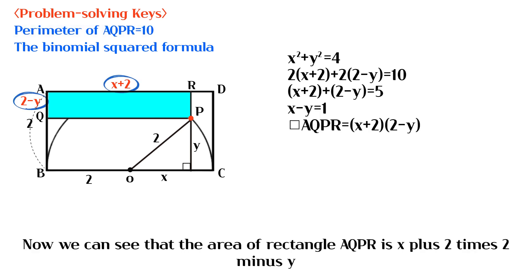Now we can see that the area of rectangle AQPR is x plus 2 times 2 minus y.